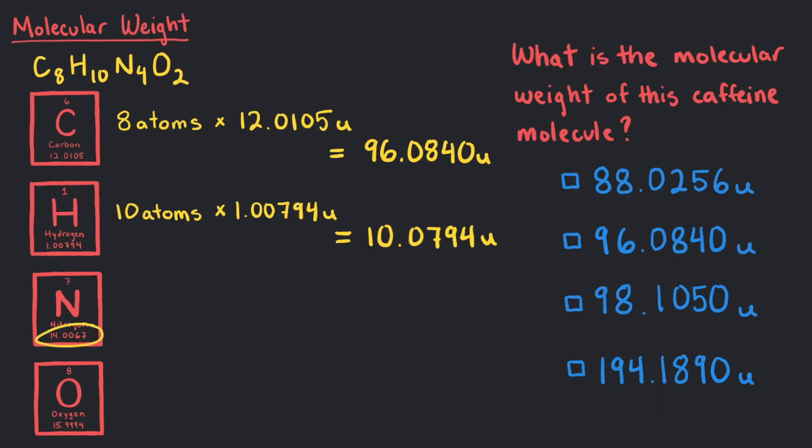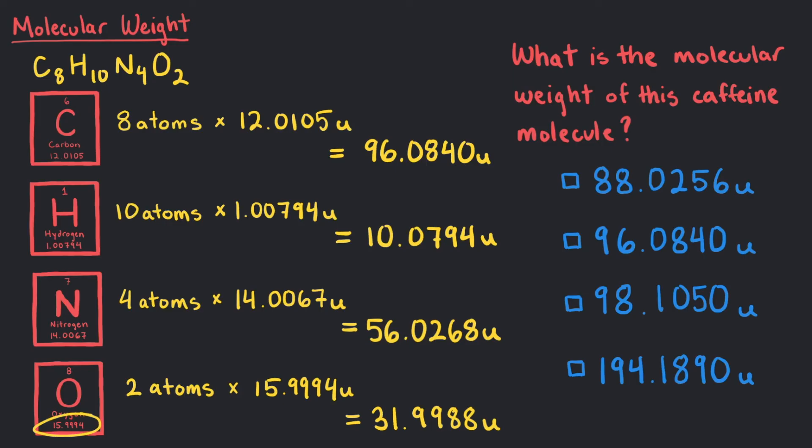Each nitrogen atom weighs 14.0067U. So 4 nitrogen atoms times 14.0067U is 56.0268U. And the 2 oxygen atoms times the atomic weight for each atom 15.9994U equals 31.9988U.